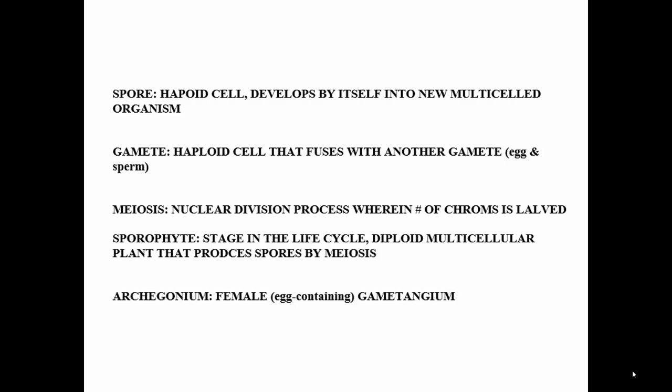The sporophyte is one of the two stages in the alternation of generations — the plant life cycle. It is diploid and produces spores by meiosis. In contrast, the gametophyte is haploid and produces gametes by mitosis.